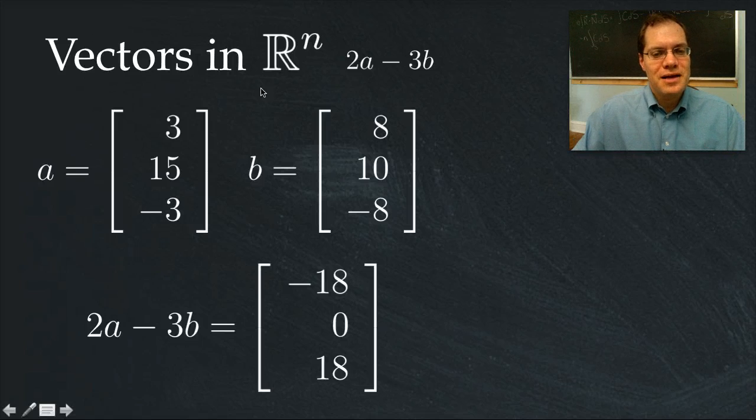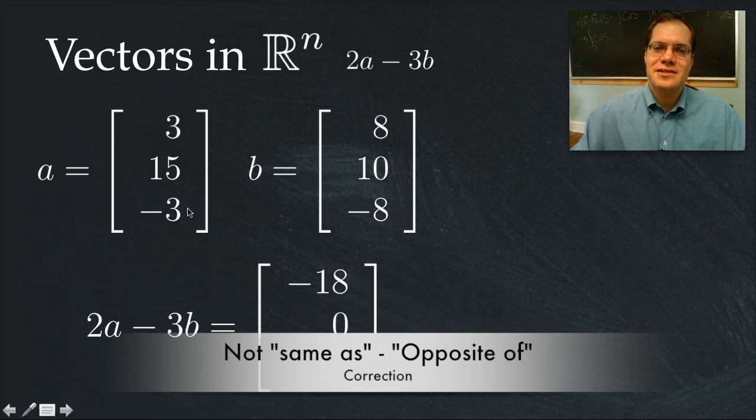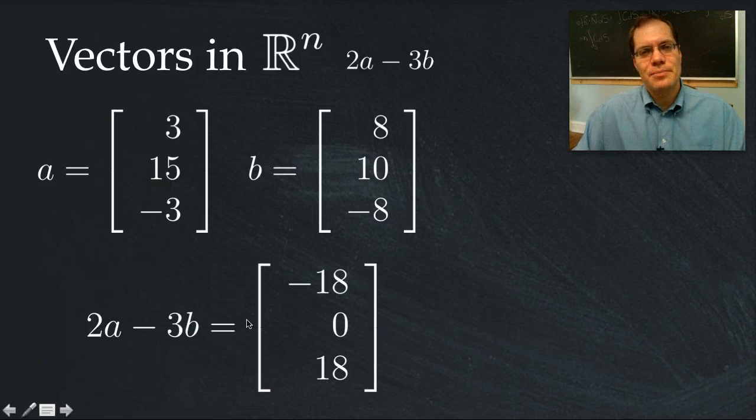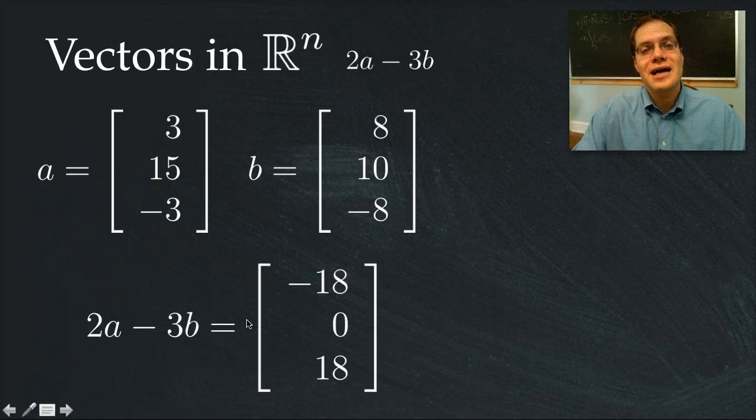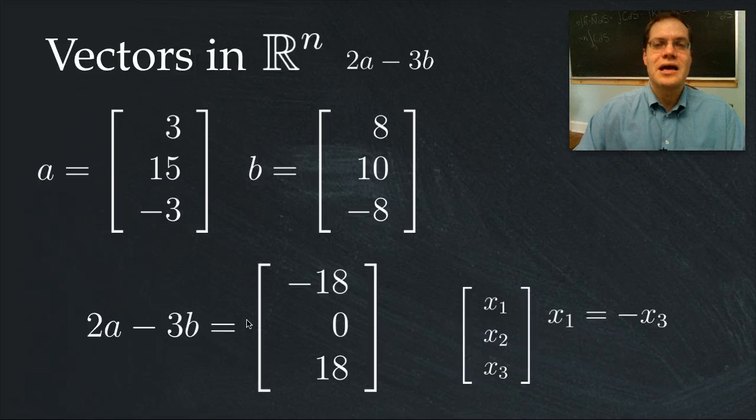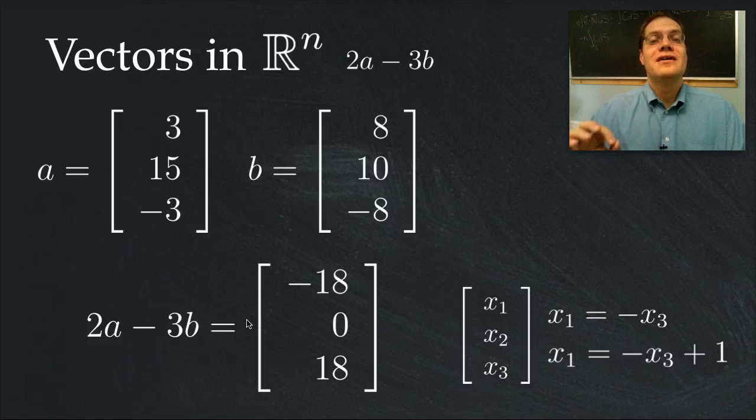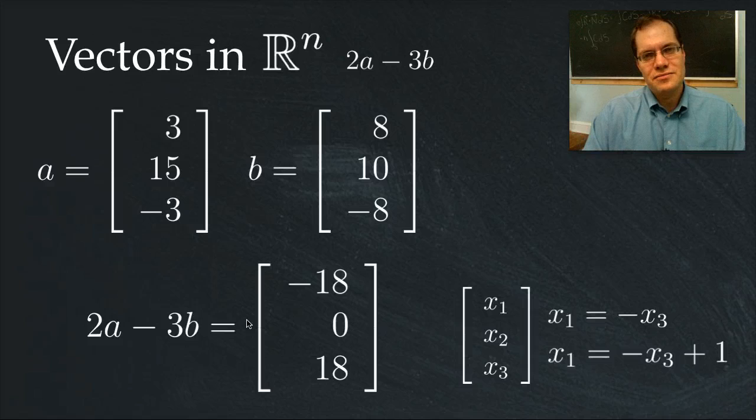You will notice that these polynomials share the property that the first entry is the same as the last entry. And the linear combination has the same property. Now, is this the kind of property, x1 equals negative x3, that's preserved by linear combinations? And once you answer that question, and give me a verbal explanation for why you think that's true, you can consider this follow-up question of the first entry is 1 greater than minus the last entry.